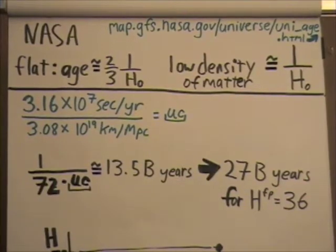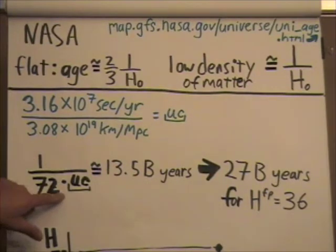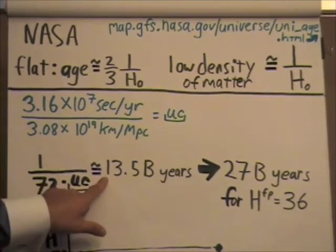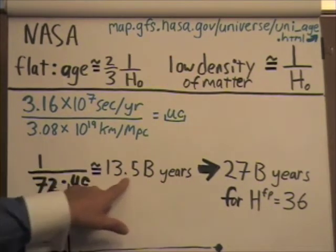So to calculate the age of the universe, we're going to take one over the Hubble constant. So let's assume it's 72. And then we have to convert the units. So here's the unit conversion numbers. And they go in there. And when you do that, it comes out to 13.5 billion years.